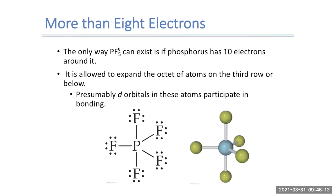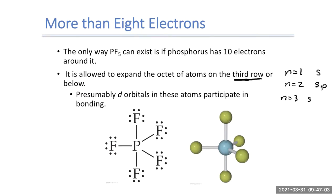Now for our final exception — the expanded octet — when we have more than eight electrons around an atom. For example, PF5, phosphorus pentafluoride, can exist only if phosphorus has 10 electrons around it. The expanded octet only works for elements in row three or below. In the n=3 level, we have s, p, and d orbitals. The d orbitals are where we can put extra electrons to expand the octet.